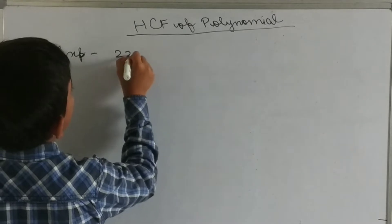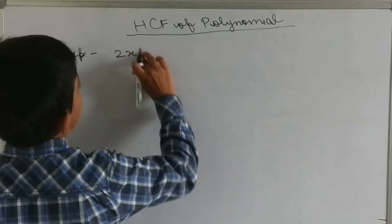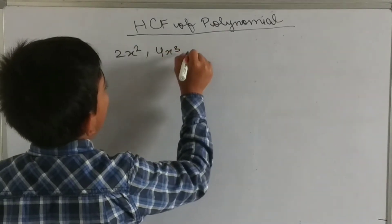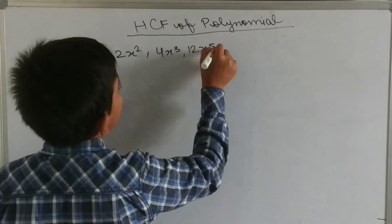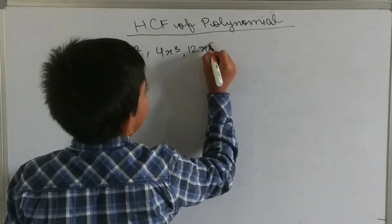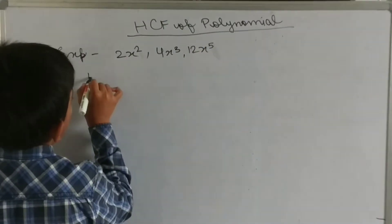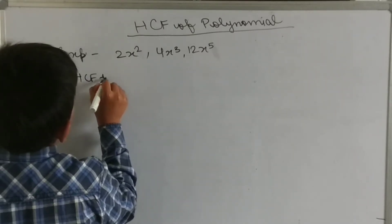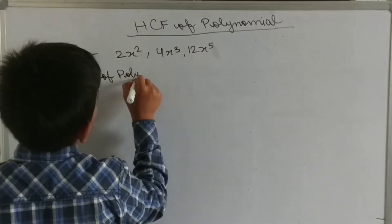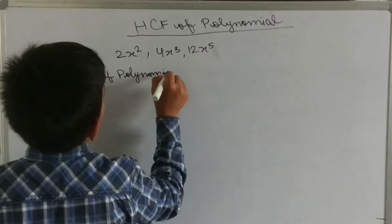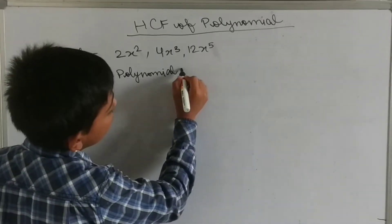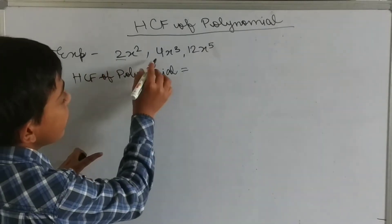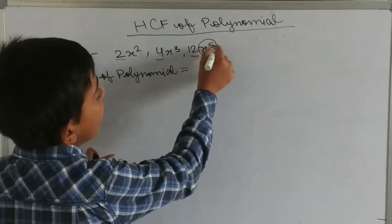So let's take an example. Suppose we have 2x squared, 4x cubed, and 12x to the power 5. The HCF of this polynomial is the combination of the constant part and the variable part.